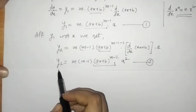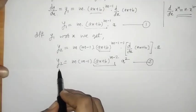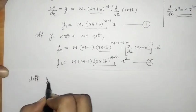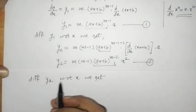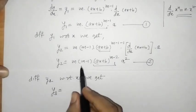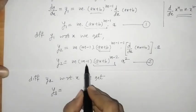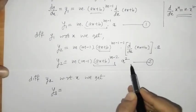Now we want y3, so we differentiate y2 again. Differentiating y2, we have y3: here m(m − 1) and a squared are constants, so they remain as is.